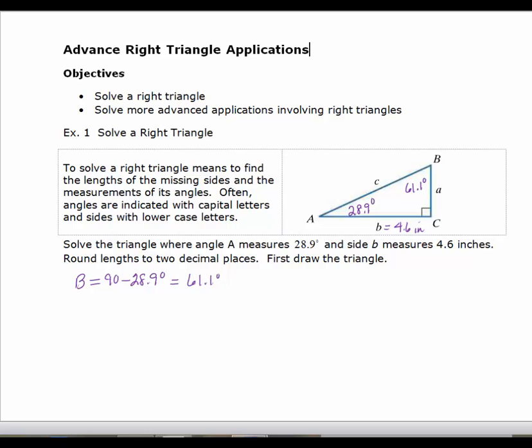Now our job is to find side A and side C. We use capital letters for the angles and lowercase letters for the sides. I need to use one of my trigonometric functions. I'm given side b and angle 28.9. Even though I can use the 61.1 degrees, since that's a value I found, I would prefer to use a value that was given to me, just in case I made an error.